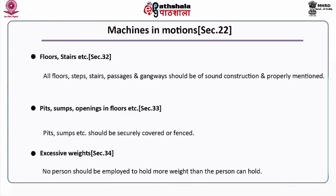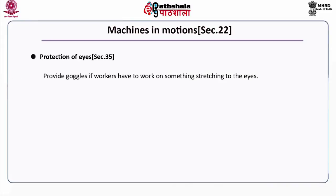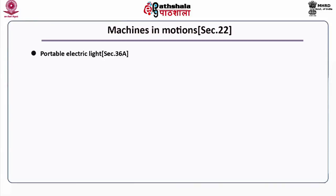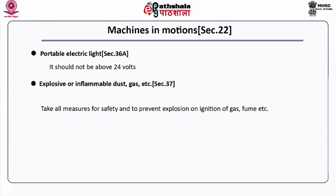Excessive weights under Section 34: no person should be employed to carry more weight than the person can hold. Protection of eyes under Section 35: provide goggles if workers have to work on something stretching to the eyes. Section 36, dangerous fumes: it is prohibited to employ workers in places where dangerous gas or fume is present, and practicable measures should be taken for removal of gas and fumes. Under Section 36A, portable electric light should not exceed 24 volts. Section 37 covers explosive or inflammable dust and gas: all measures for safety should be taken to prevent explosion or ignition of gas and fumes.